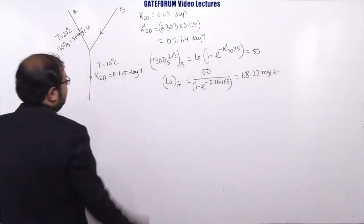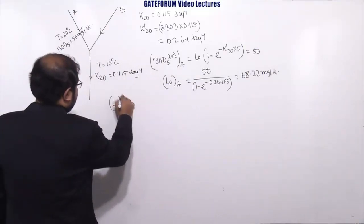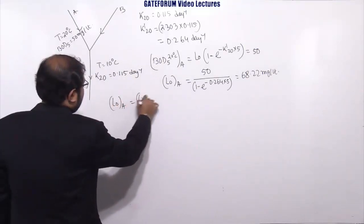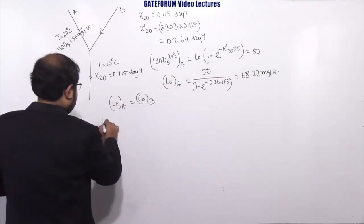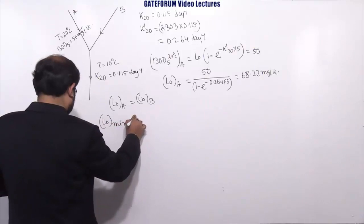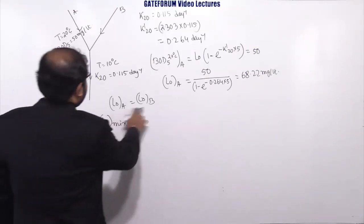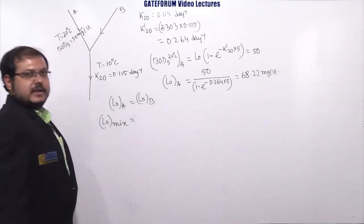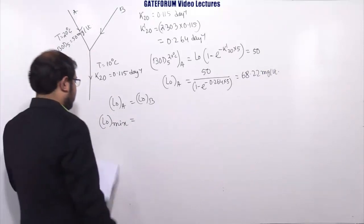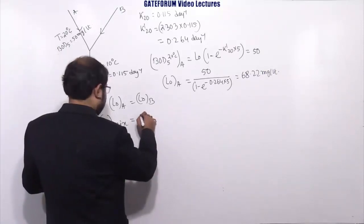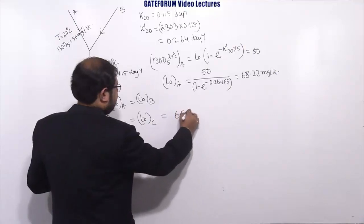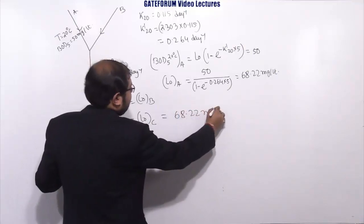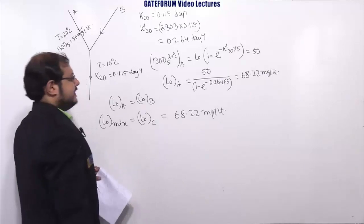Now, they have told that L0 of A equals L0 of B. So once again, L0 of mix will be equals to, as they are mixed with each other having same value, L0 of mixture will also be L0 of C only, average done it will happen. It will be 68.22 mg/L only, average done because they are having same values.